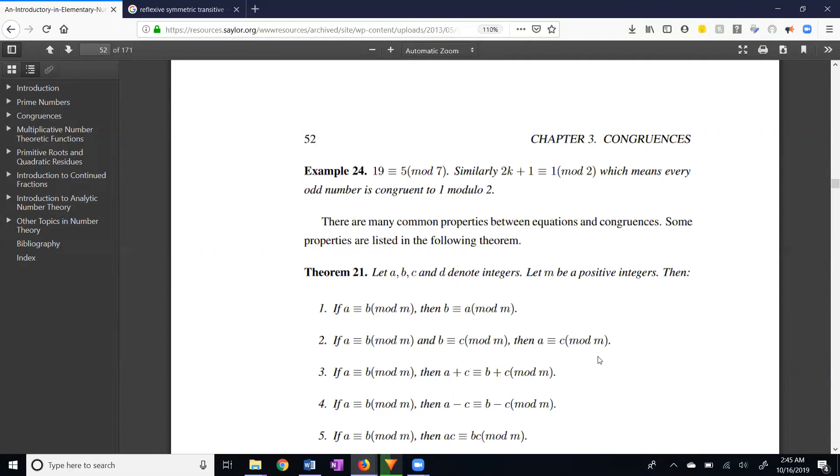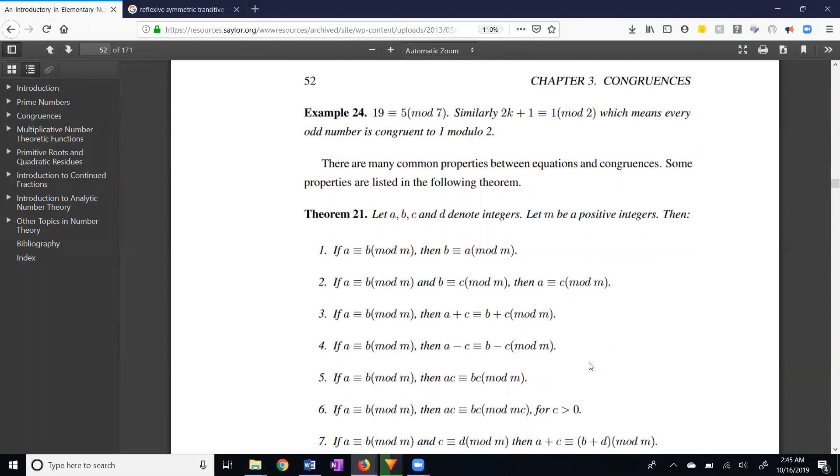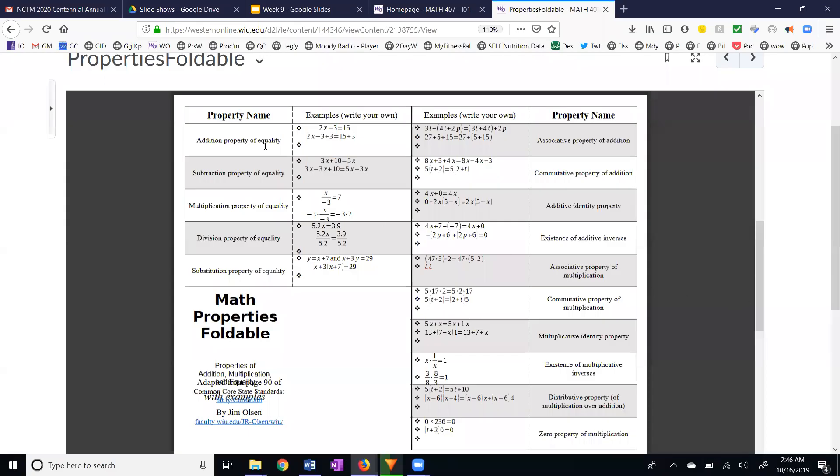Now, if we look at our foldable from week one of the course and look at the properties of equality, we have the addition property of equality, which means we can add a number to both sides. The subtraction property of equality, which means we can subtract something from both sides. The multiplication property, multiply both sides by a number. And the division property of equality, you can divide both sides of an equation by a number, as long as you're not dividing by zero.